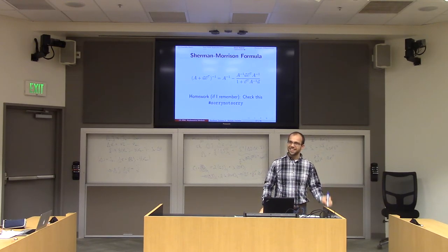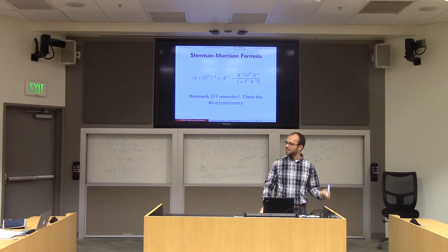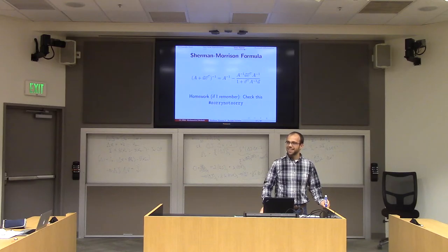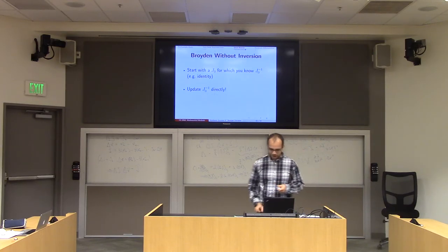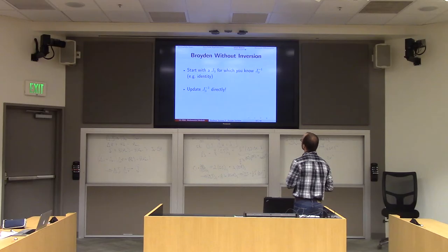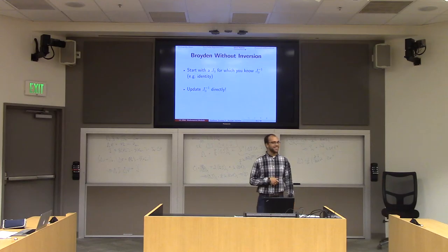So what does this suggest about how we can change Broyden's method to avoid inverting matrices J? Remember, we should generally never write down the inverse of a matrix explicitly. What I could do is choose J0 to be the identity, and then I already know J0 inverse — it's the identity.